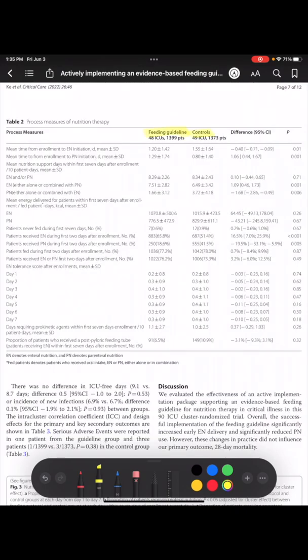The feeding guideline group received quicker nutrition than the controls, although the initiation of nutrition was within 48 hours in the control group as well. Seems like the standard practice of the control group was pretty reasonable, although they were pretty excited to start parenteral nutrition.